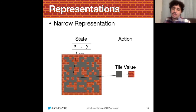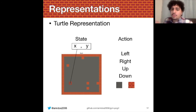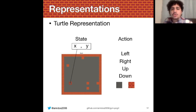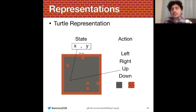We wanted something between narrow and wide, so we use what we call the turtle representation. The turtle representation input is the same as narrow — a level and a location — but now the model can modify that location directly, or it can say it doesn't want that location and instead move up, down, left, or right. So it can move around like a tiny turtle from the Logo programming language, going around modifying the level and making changes.